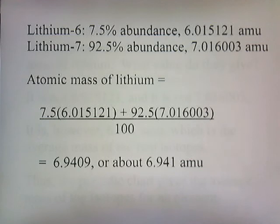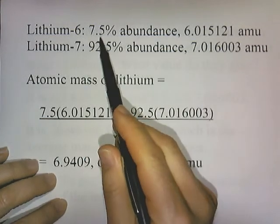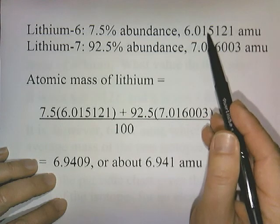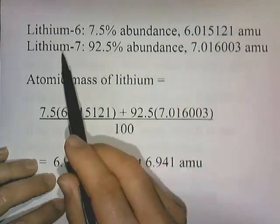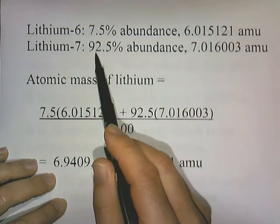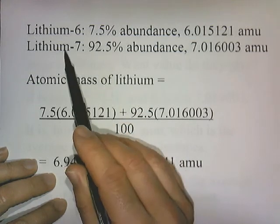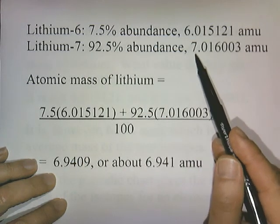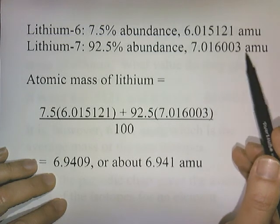Alright, so here's our facts so far. We have lithium-6, it has a 7.5% abundance, and that's how heavy it is: 6.015. Lithium-7, in nature 92.5% of all lithium atoms are lithium-7, and each lithium-7 isotope weighs 7.016003 atomic mass units.